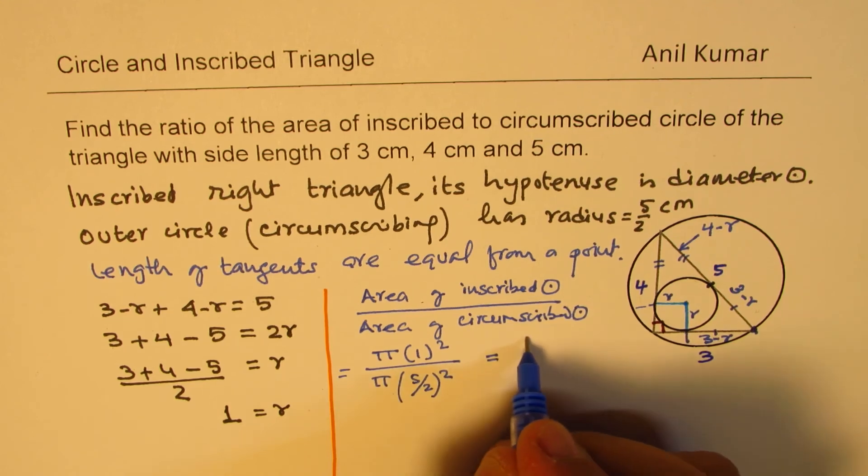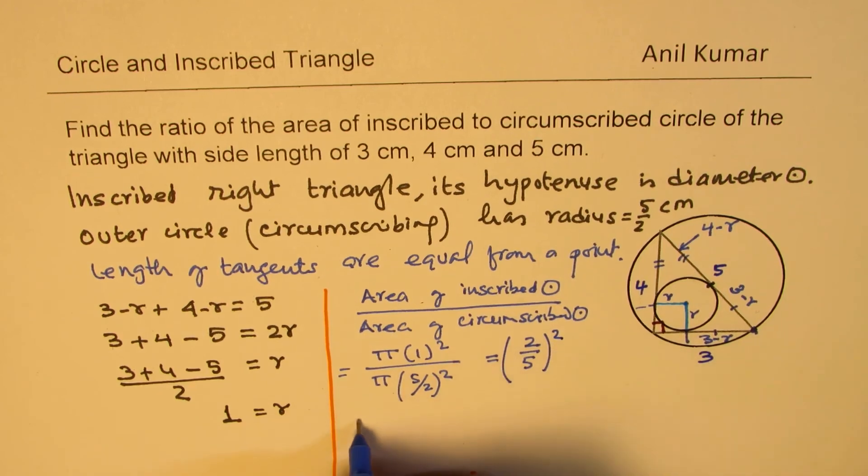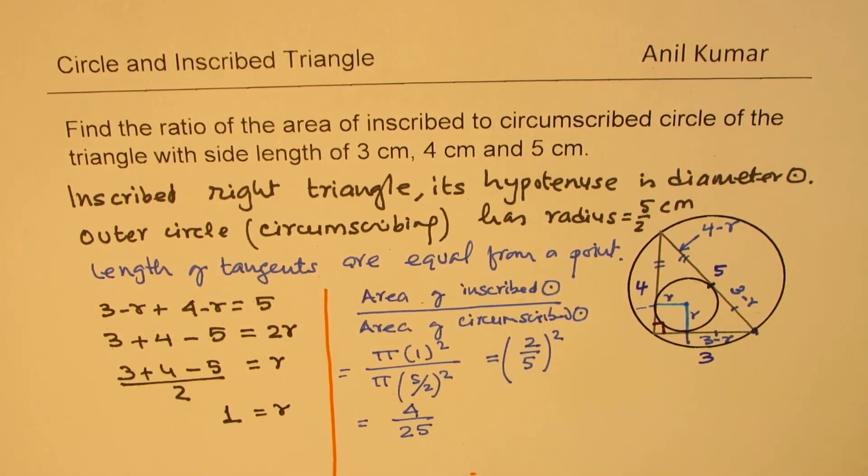So what you get here is 2 by 5 whole squared, or we get ratio as 4 over 25. So that becomes the ratio of area of these two circles.